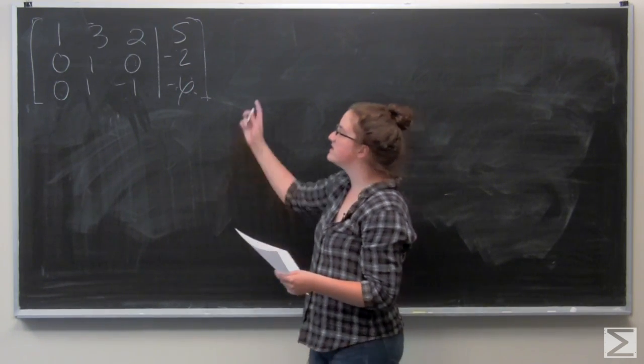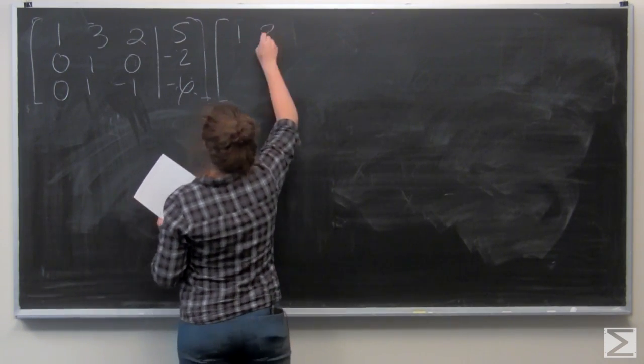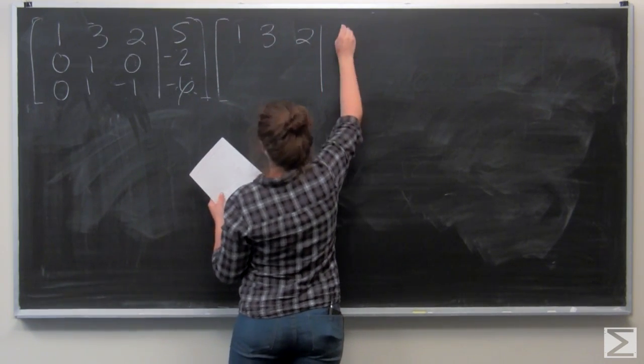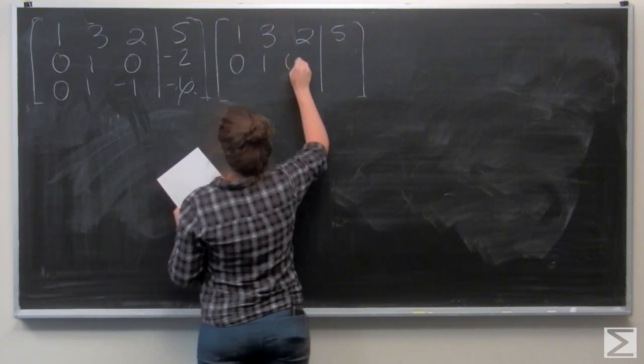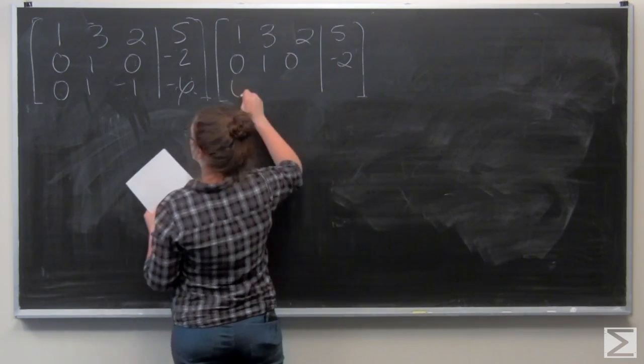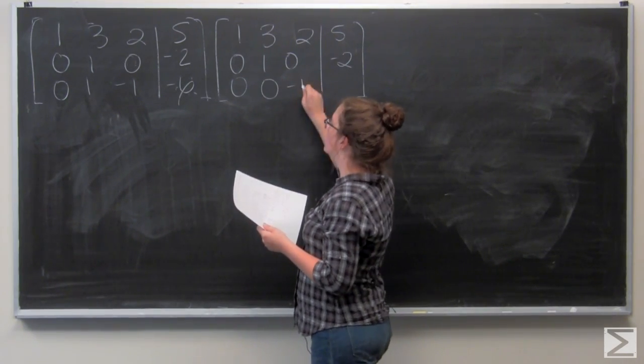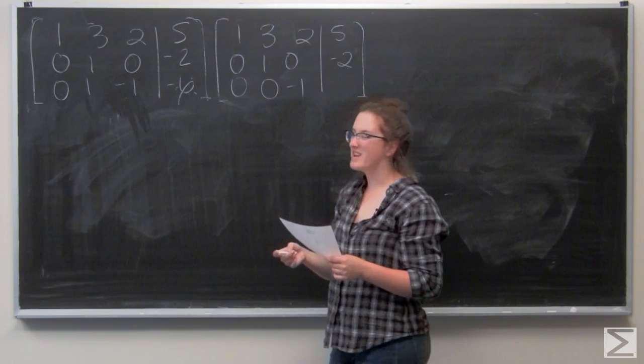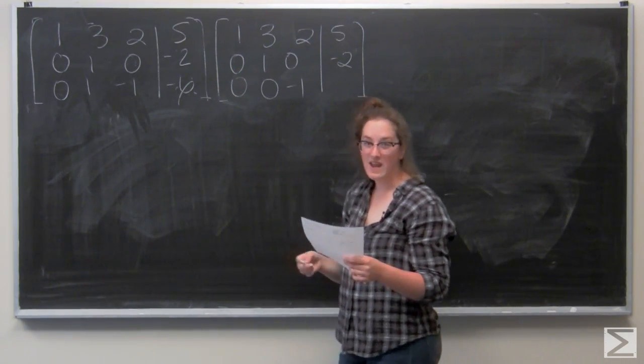And from there, let's subtract the second row from the third. So I have 1 minus 1, which is going to be 0. Negative 1 minus 0 is just negative 1. And negative 6 plus 2 is negative 4.